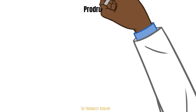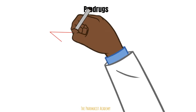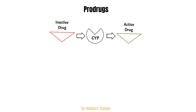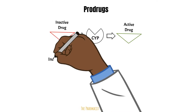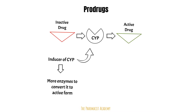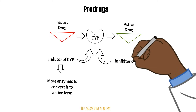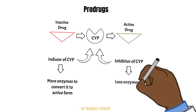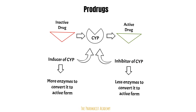Before I end this video, I wanted to apply what we learned to pro-drugs. Pro-drugs are simply drugs that need to be activated first in order to actually work, and the CYP enzymes are sometimes the catalyst for this. When dealing with drug interactions, if a patient is on a pro-drug and a CYP inducer, this will lead to more enzymes that will convert the pro-drug into the active form. Conversely, if the patient is on an inhibitor of the CYP enzyme, this will lead to fewer enzymes converting the pro-drug to its active form.